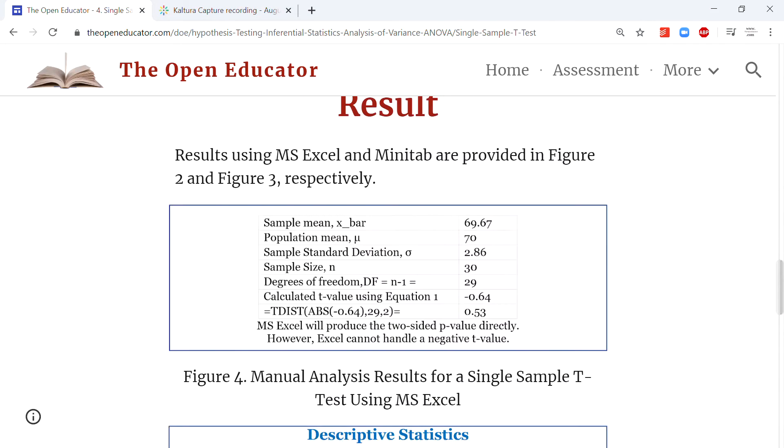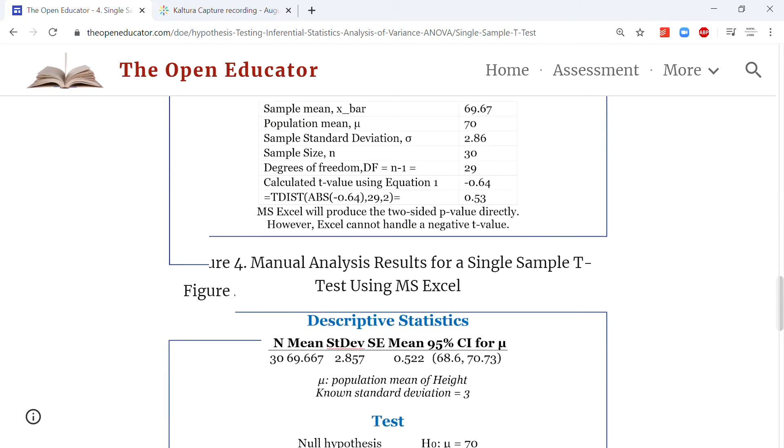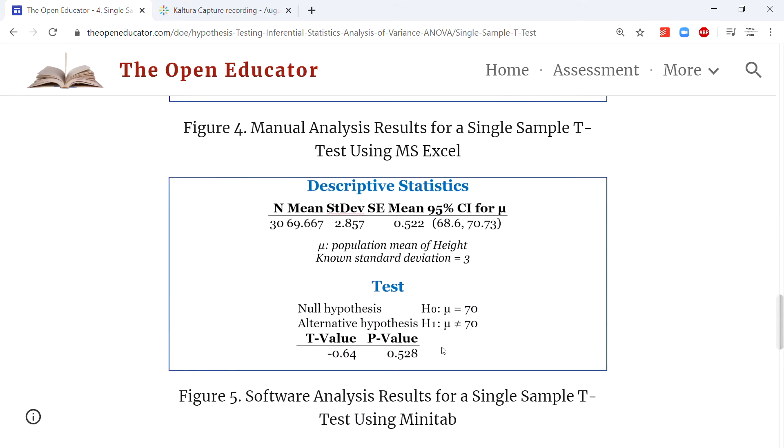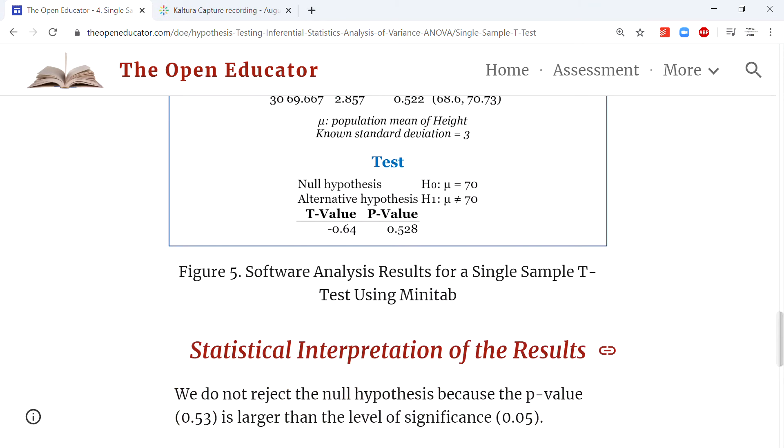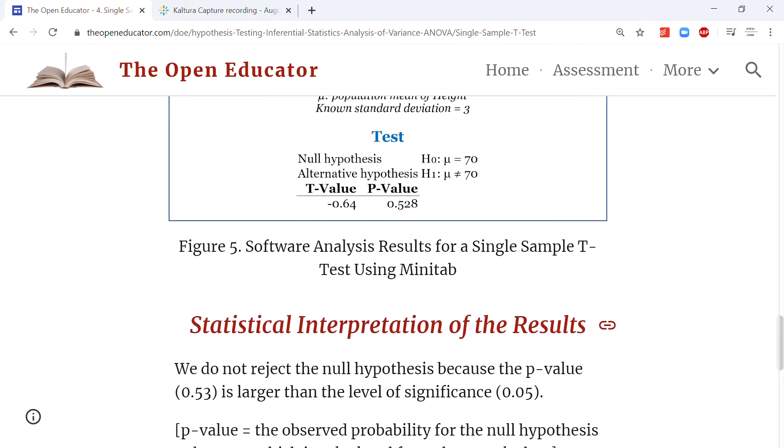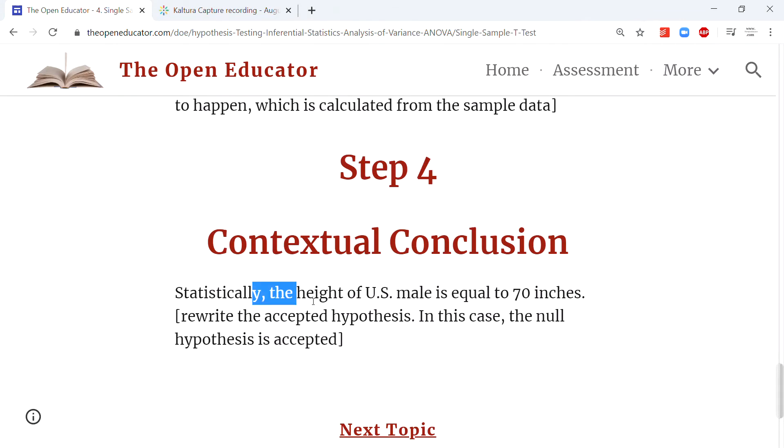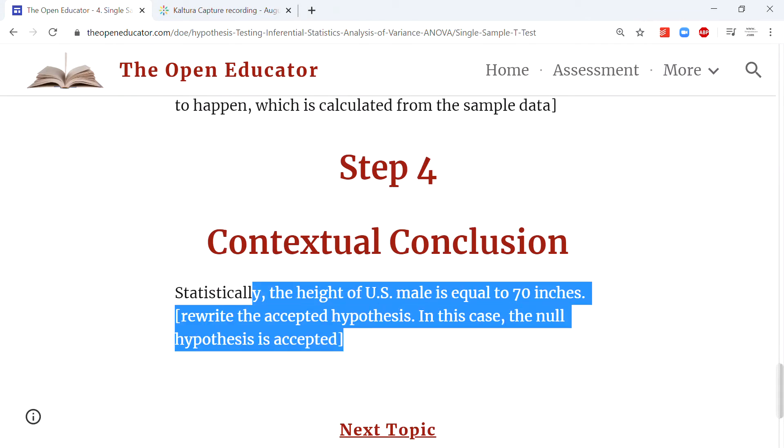The contextual conclusion would be: statistically, the height of US males is 70 inches.